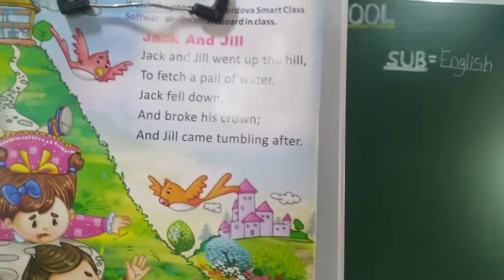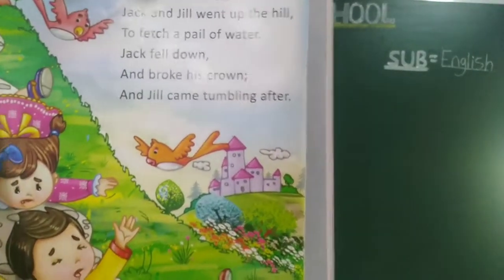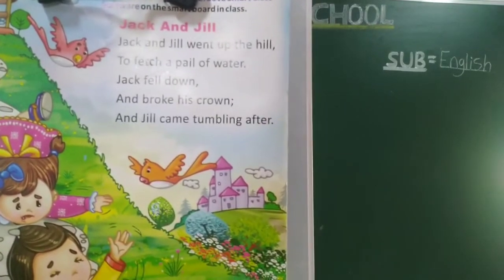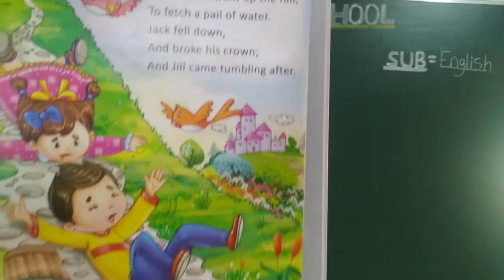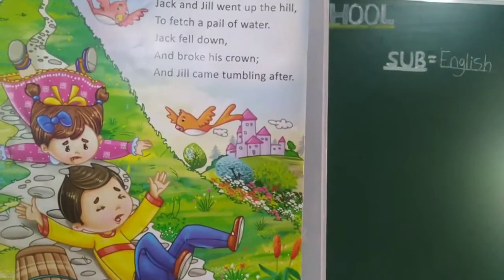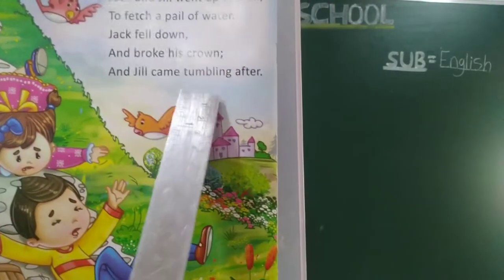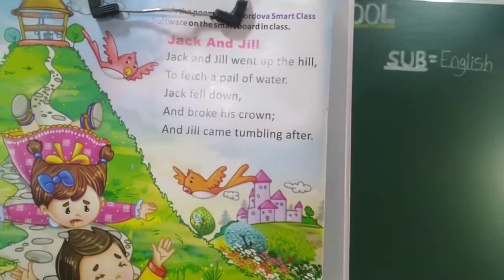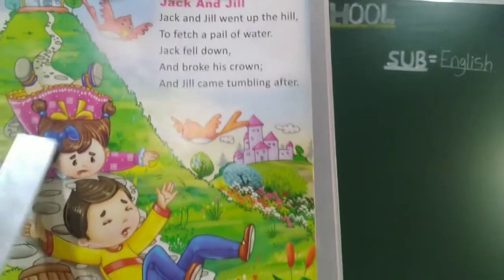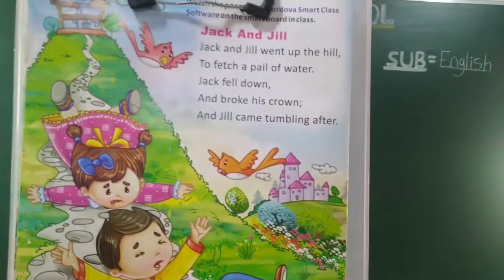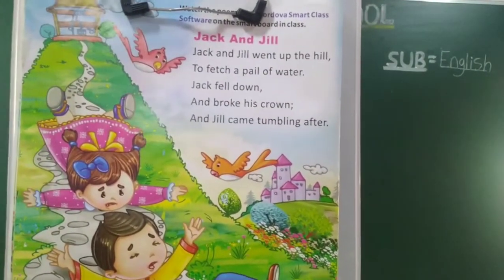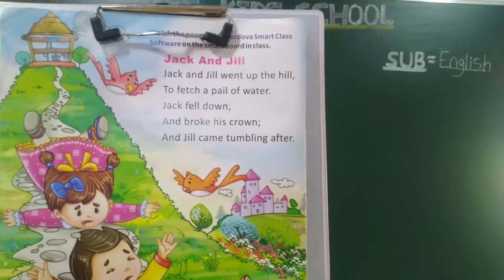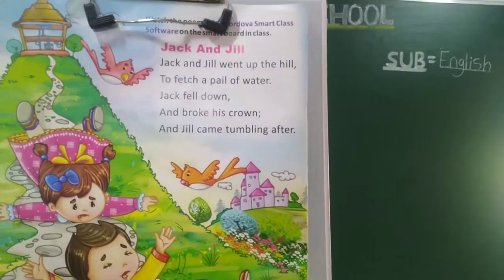And Jill came tumbling after — parat Jill aalele ahean chila te gondhra lele ahe. Jack padlaan kundhra lele ahe. Tumbling means gondhra lele ahe.